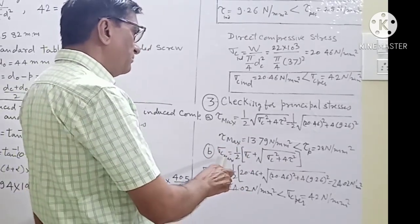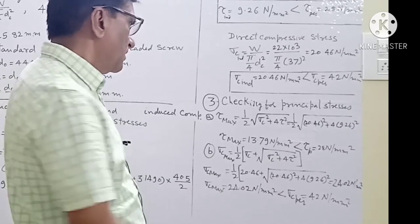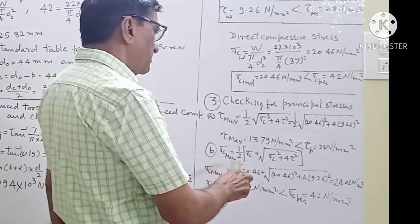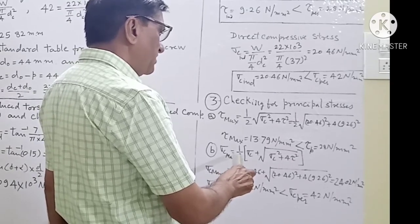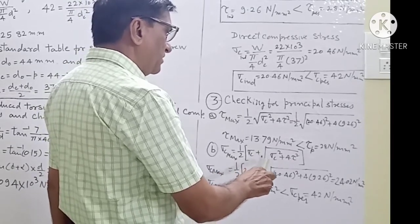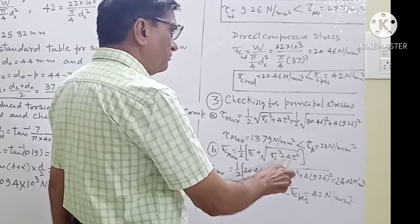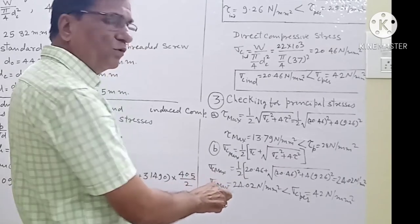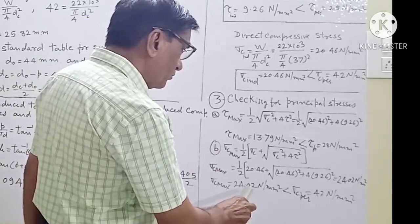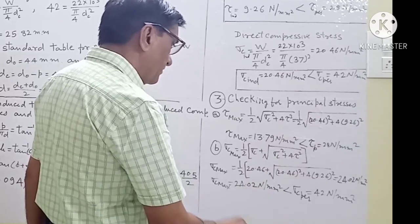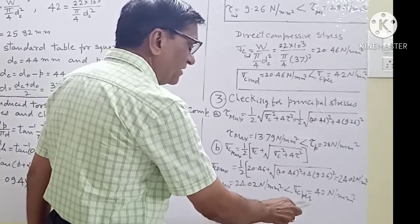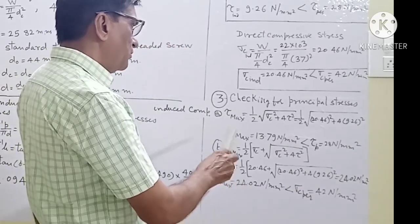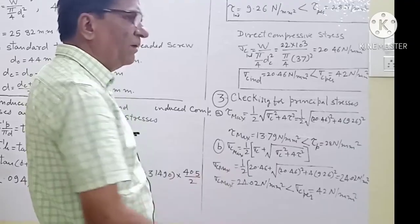Now we find the maximum compressive stresses. The formula is σC_max equal to (1/2)·[σC + √(σC² + 4τ²)]. The maximum compressive stress comes out to be 24.02 N/mm², whose value is less than σC_permissible of 42 N/mm². Hence, the screw is safe for maximum compressive stress.